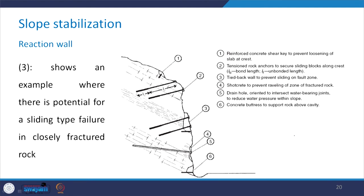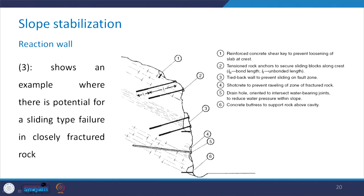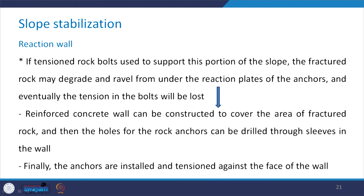The third type of slope stabilization measure involves the use of a reaction wall. Although rock anchors have been provided, at the same time a reaction wall has already been given in this particular portion. This third measure is an example where there is a potential for sliding-type failure in closely fractured rock. If tensioned rock bolts are used to support this portion of the slope, the fractured rock may degrade and ravel from under the reaction plates of the anchors.